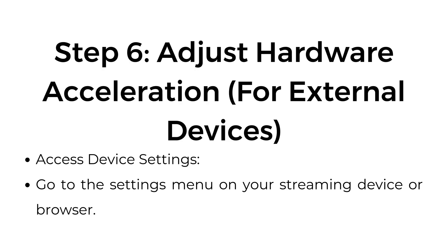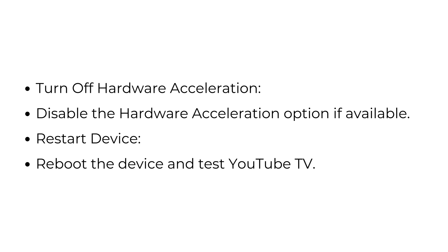Step 6: Adjust hardware acceleration for external devices. Access device settings by going to the settings menu on your streaming device or browser. Turn off hardware acceleration by disabling the option if available. Restart the device and test YouTube TV.